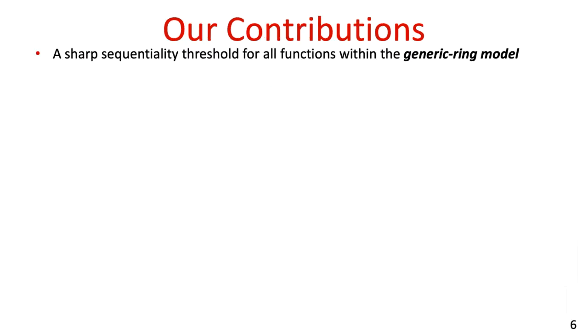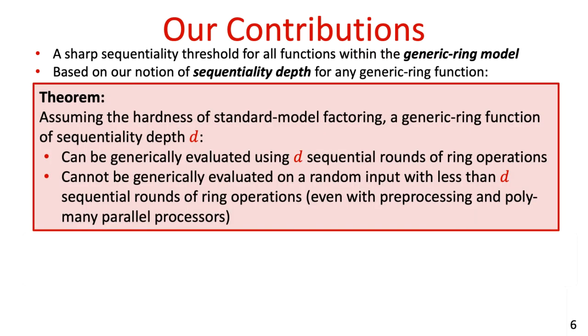Additional candidates are the class groups of imaginary quadratic fields, but they are not as well studied cryptographically. It should be emphasized that the sequentiality assumption for repeated squaring in RSA groups is exactly that — an assumption — and prior to this work there was no formal security argument supporting this assumption, as there is for the iterated hashing function. So the main question we deal with in this work is: can we base the sequentiality of repeated squaring in RSA groups on other better established assumptions such as the factoring assumption or the RSA assumption? Our main contribution is answering this question in the affirmative within the generic ring model.